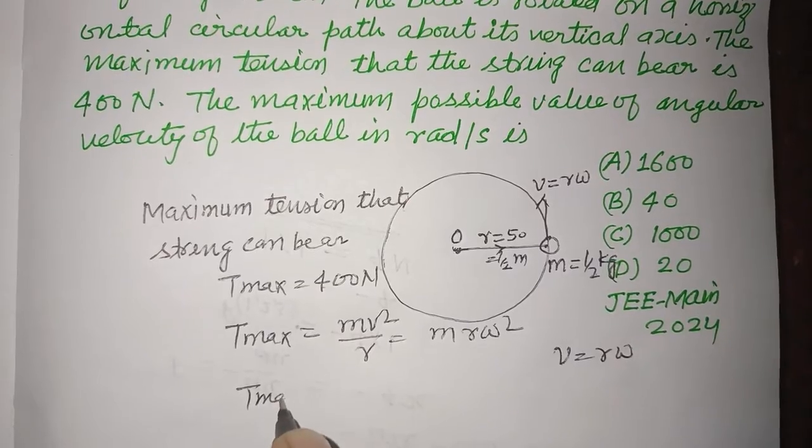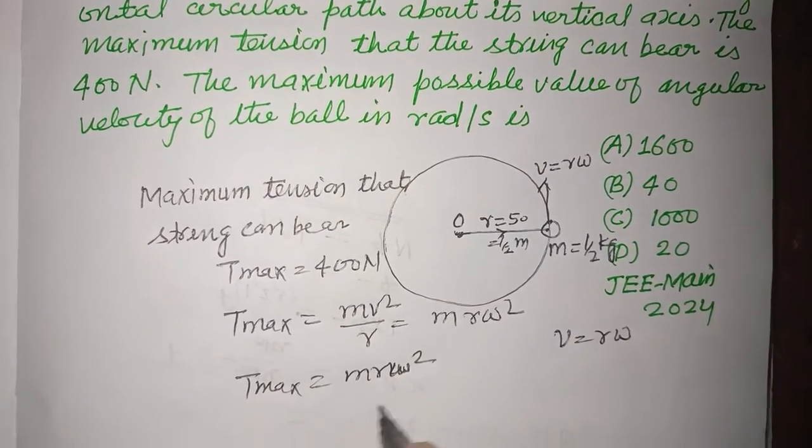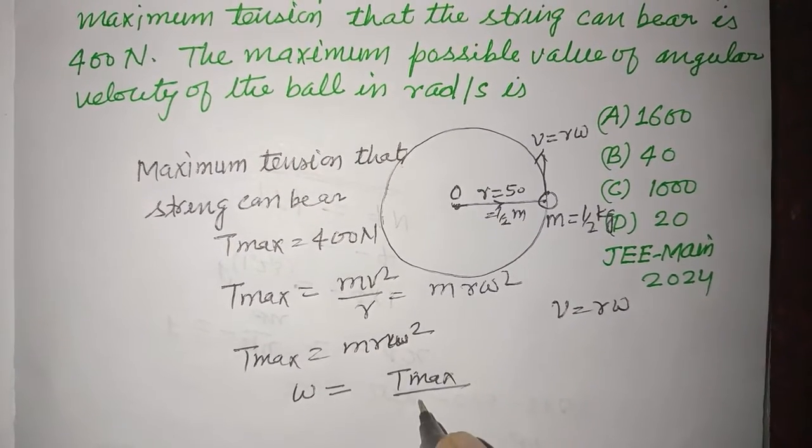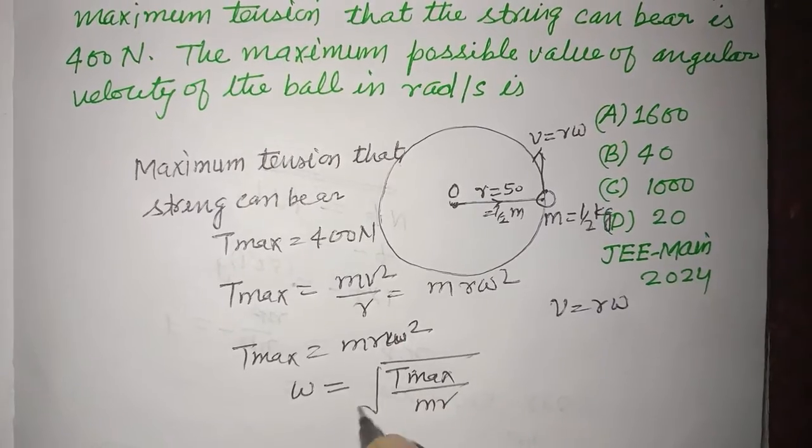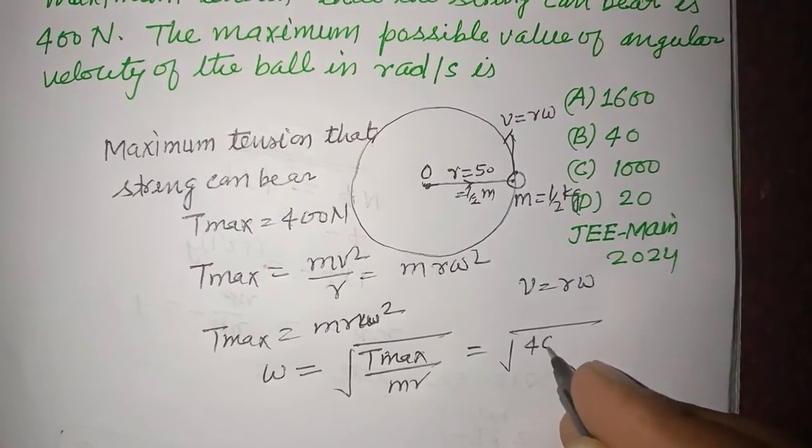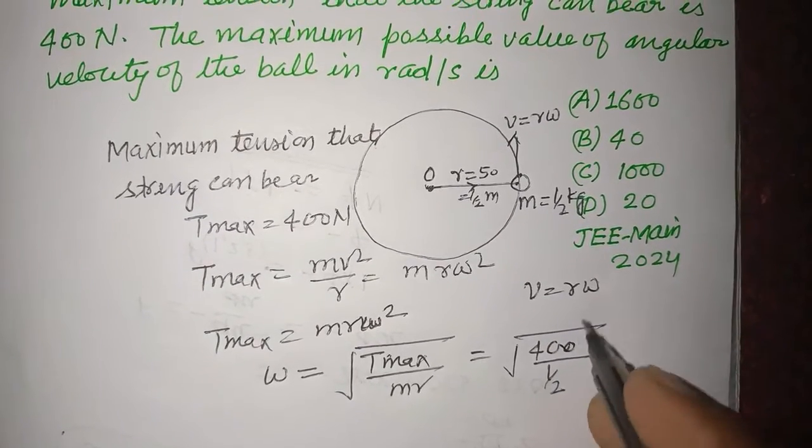So T maximum equal to mr omega square. So omega is from here, T maximum over mr. So T maximum is given to us 400 N, M is 1 by 2 kg.